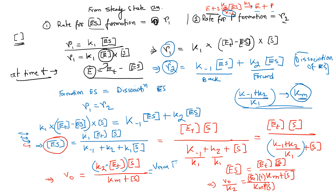So we arrive at the Michaelis-Menten equation: v0 equals Vmax times [S] divided by (Km plus [S]). This is the Michaelis-Menten equation, possible only when the steady-state concept and all its assumptions are satisfied. At that point, the rate of formation of ES equals the rate of dissociation of ES, and we can set r1 equal to r2 and derive the full equation.